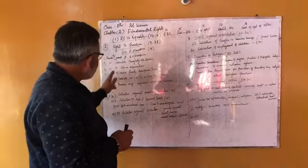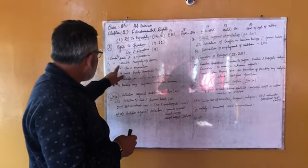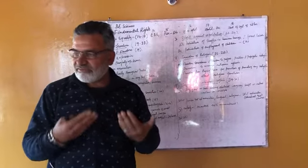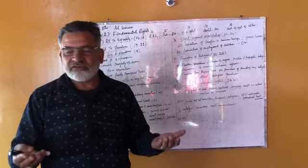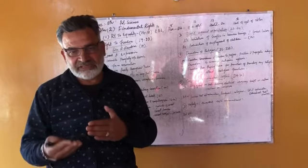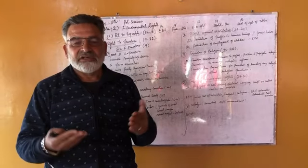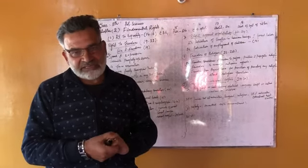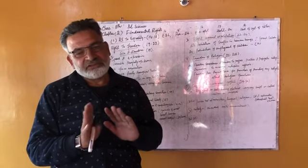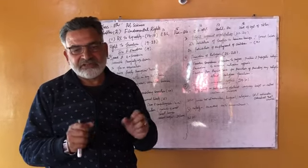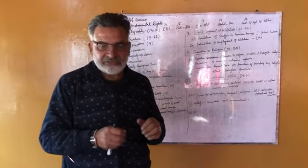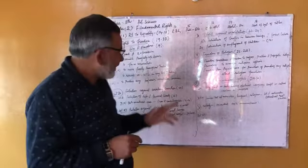Number two is the right to assemble peacefully without arms. Whatever we want to express, whether demands, protest, or any kind of demonstration, we can assemble, but it is mandatory that there should not be any kind of arms or weapons in our hands. We can assemble but without arms.